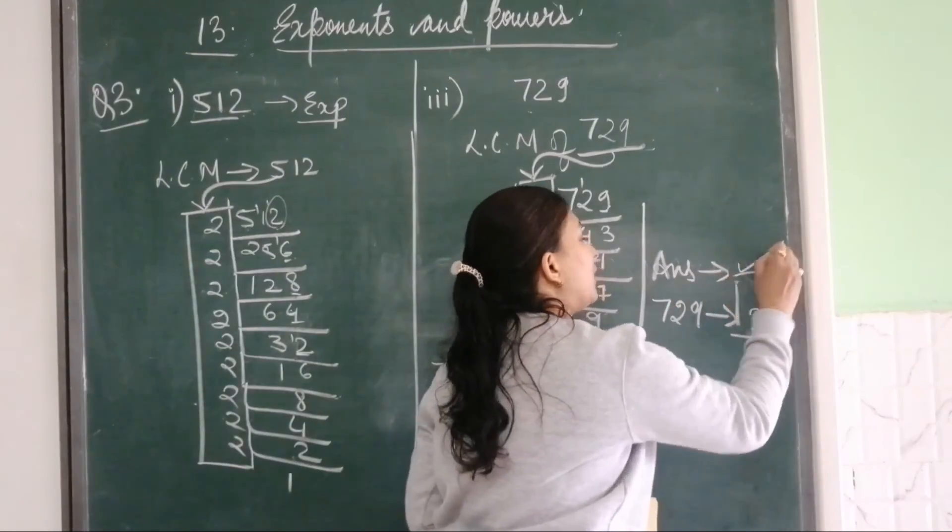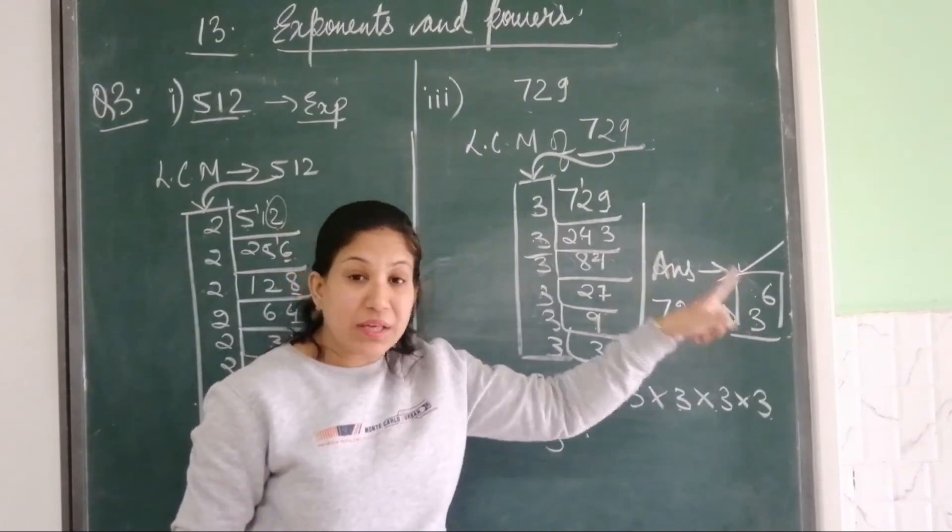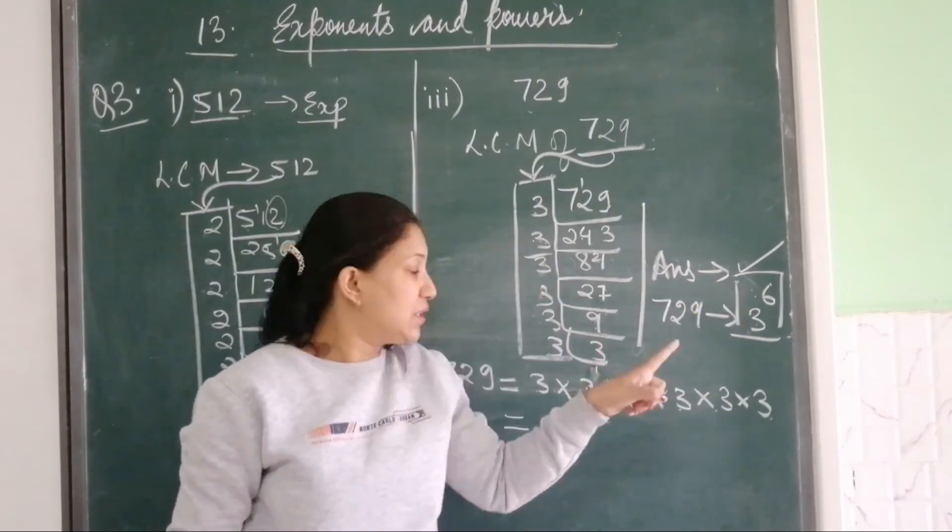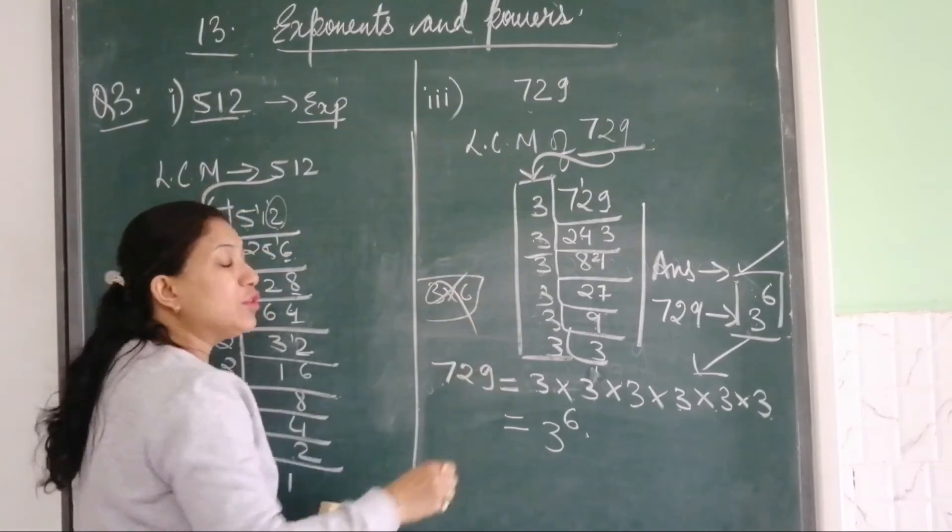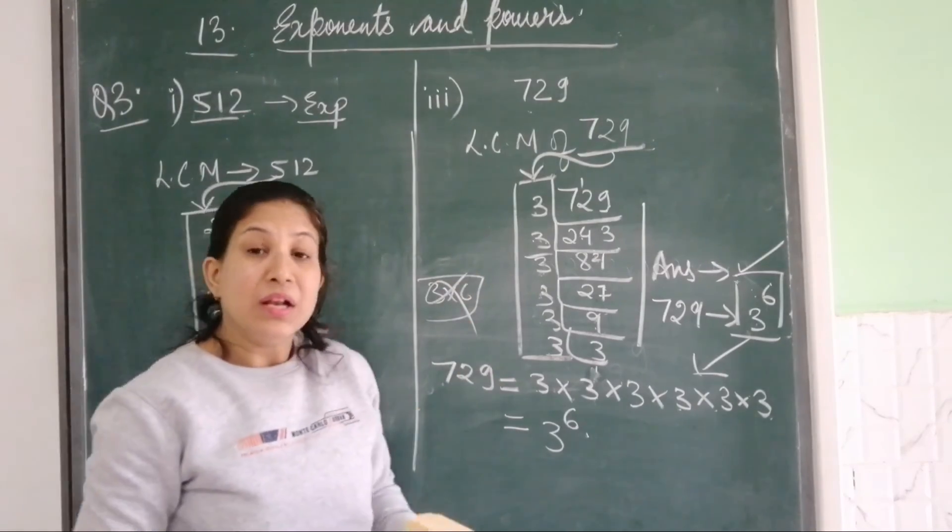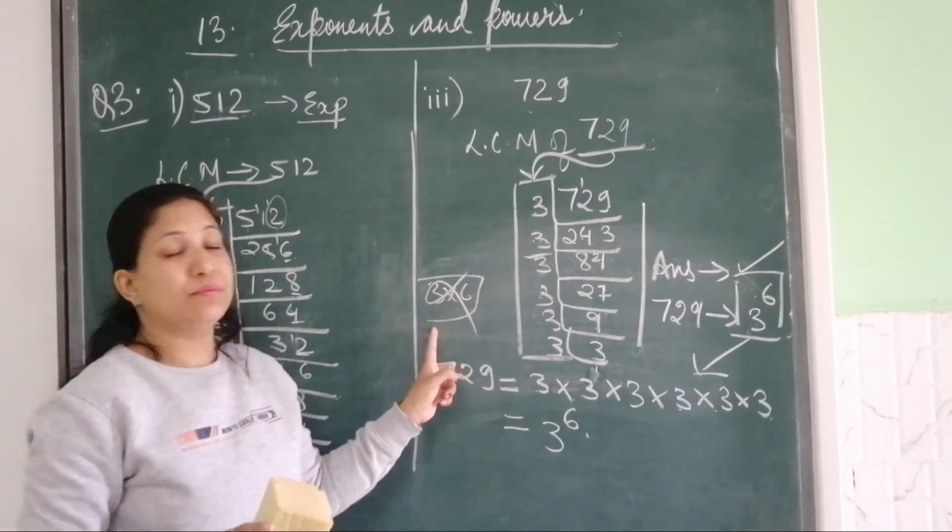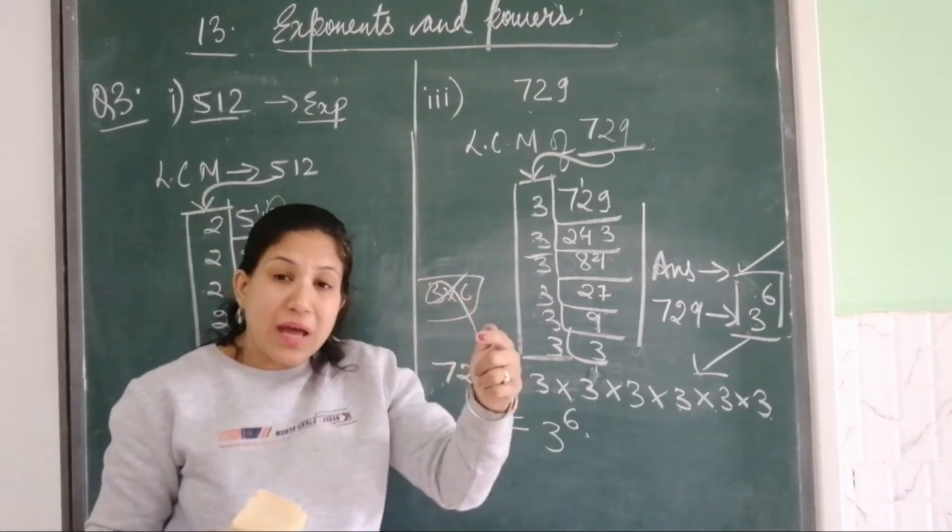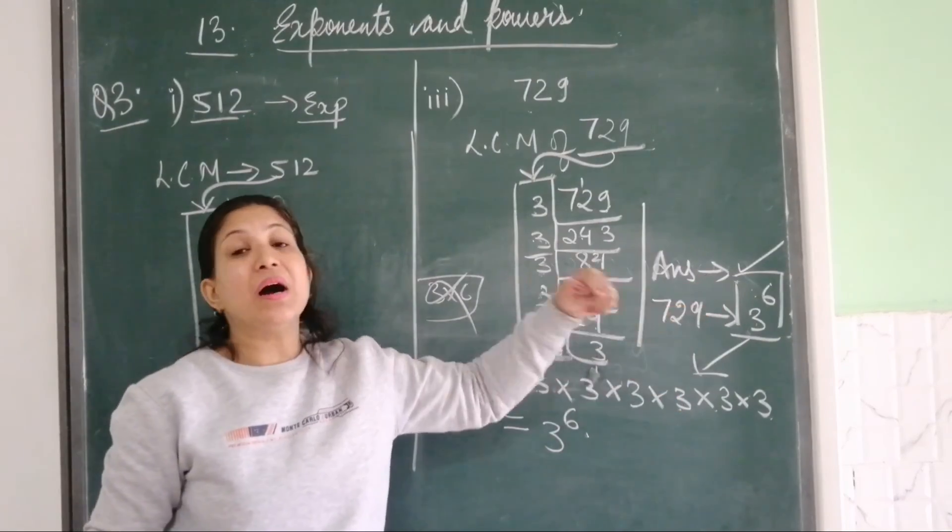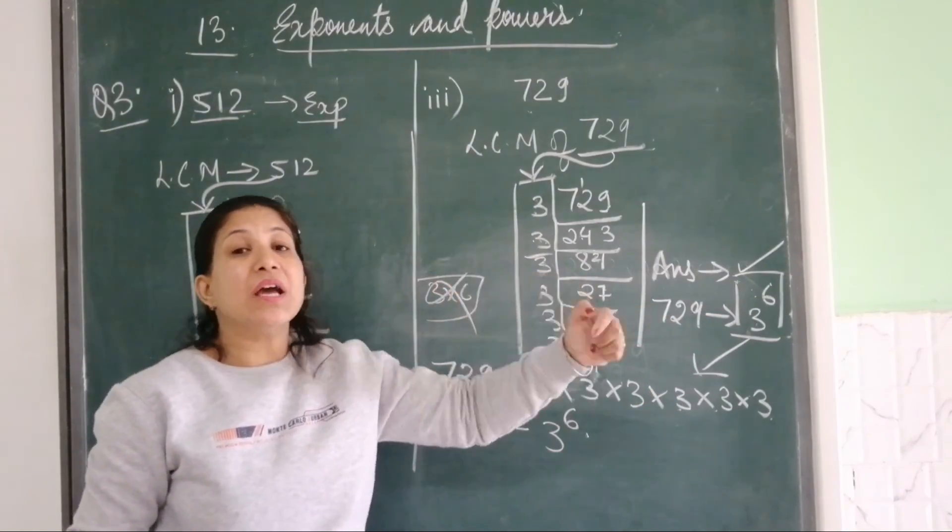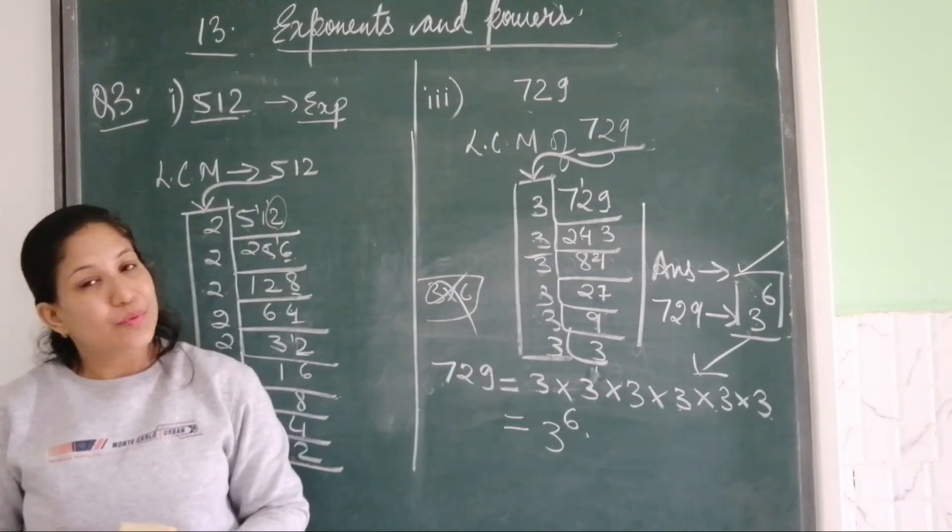Children, please, please, here you take care that 3 to the power 6 means 3 will repeat 6 times like this. See, here it will not be 3 into 6. Because most of the children when they are in a hurry in exam, sometimes I have seen not most but a few of them make this mistake. So repeatedly, wherever you can make mistake, I am checking you. Keep on revising in mind: 3 power 6 means 3, 6 times repeat. Okay, so I hope you have understood the third question very well.